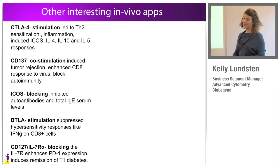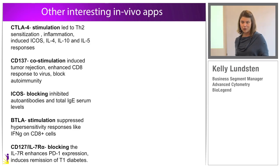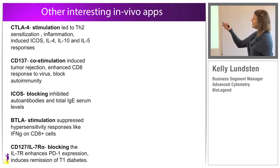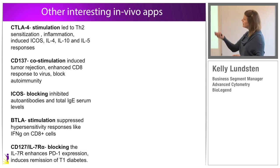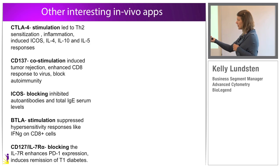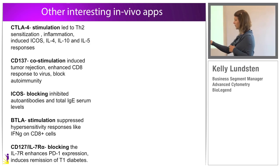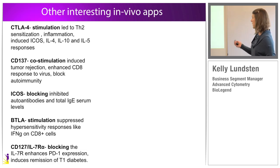This led me to think about what antibodies people are regularly requesting as custom LEAF-quality purified formats — and there were just so many. Some are actually in therapeutic contention: CTLA-4, CD137 where co-stimulation leads to ICOS, ICAS as a blocking effect, BTLA as a stimulation effect, and CD127 as a blocking effect. All of them modulate a pathway in some way that could be desirable in an animal model.